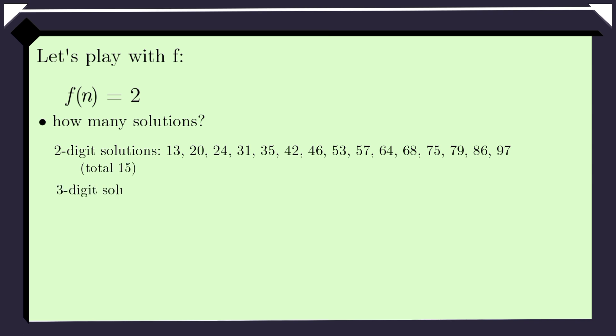Now let's play with the function F. F of 13 and F of 24 both give 2 and are therefore equal. Now a natural question to ask is, given F of n equals 2, how many non-negative integers satisfy this equation? Let's see. There are 15 two-digit numbers that satisfy this equation.